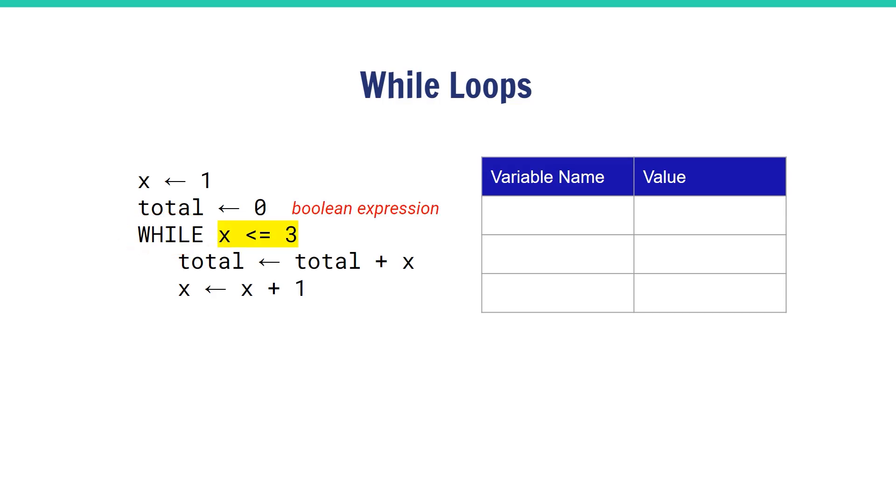Let's start at the beginning again. One gets assigned to x, zero gets assigned to total. We reach the boolean expression and evaluate it just like we do in an if statement. We find that it is still true.